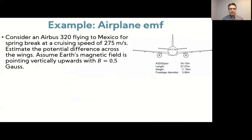So here's the first example. Consider an Airbus 320 flying to Mexico for spring break at a cruising speed of 275 meters per second. Estimate the potential difference across the wings and assume that the Earth's magnetic field is pointing vertically upwards with a strength of about 0.5 gauss. And so here are some of the specs that you would need for an Airbus A320.